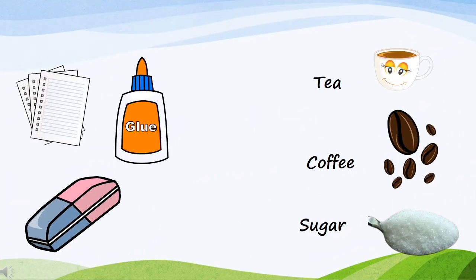Children, the notebooks and textbooks which you are using — even erasers, pencils and glue — come from plants. We get paper from plants, and we get tires and erasers from the rubber plant. We get glue from different plants such as eucalyptus and neem tree.